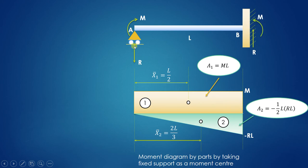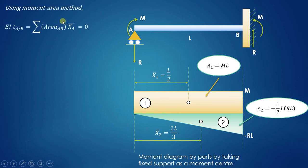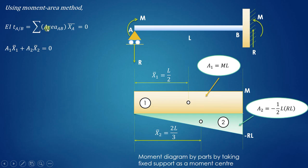For the downward reaction at the support, the reaction will be of the same magnitude but in the opposite direction. Similarly, for the clockwise moment, the moment at the support will be of the same magnitude but in the opposite direction. Now we apply the moment area method, which states that EI times deflection equals the summation of moment of area about point A, and this equals zero because the deflection at both point A and point B is zero. So summation of area times X bar equals zero.